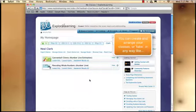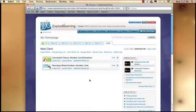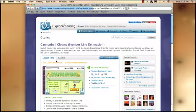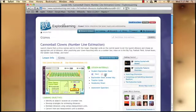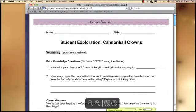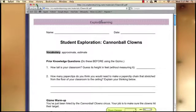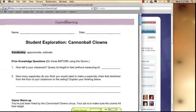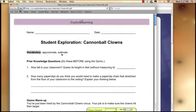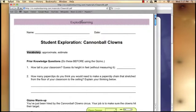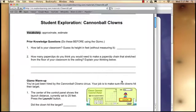But before I do that, let me show you what a gizmo looks like. First, I'll pull up the lesson info so we can follow the directions. And we'll click on the PDF. Alright. So there it is. The vocabulary is approximate and estimate. Not too many words. There's some prior knowledge questions. And first one, how tall is your classroom? Guess its height in feet.